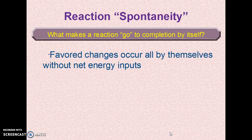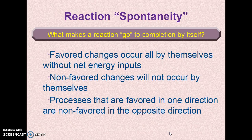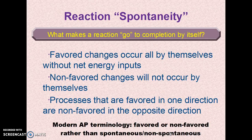Instead, we talk about changes being favored. Favored changes occur all by themselves without a net energy input — you may have to put in some activation energy, but once the reaction is started, it goes to completion all by itself. Non-favored changes will not occur by themselves. Processes that are favored in one direction, like the burning of coal in oxygen to form carbon dioxide, are non-favored in the opposite direction. Our modern AP terminology uses the term favored instead of spontaneous and non-favored instead of non-spontaneous.